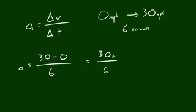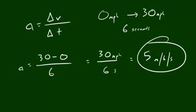So now if we simplify this that would be 30 over 6, and again like I said I might as well go ahead and throw these in, 30 miles per hour over 6 seconds. And we would end up with an acceleration of 5 miles per hour per second. So this right here is our final acceleration.